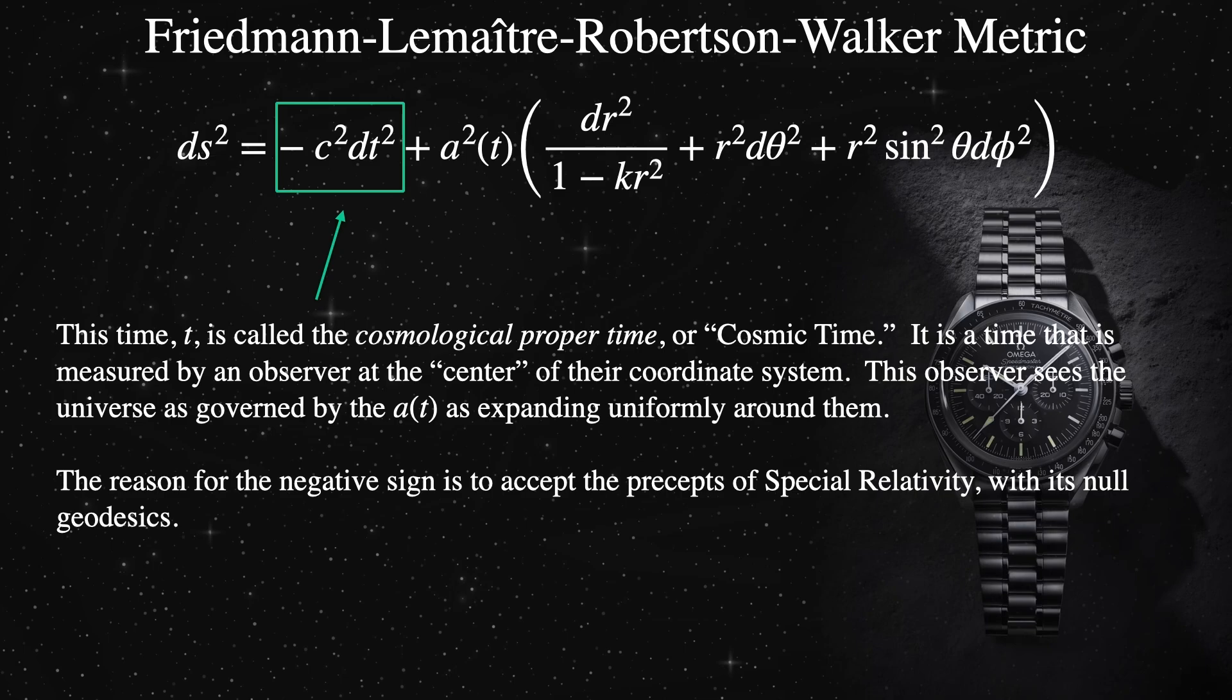It may sound dodgy to allow space to be uniform, isotropic, and homogeneous, but the time is only valid for an observer at the center of these coordinates.